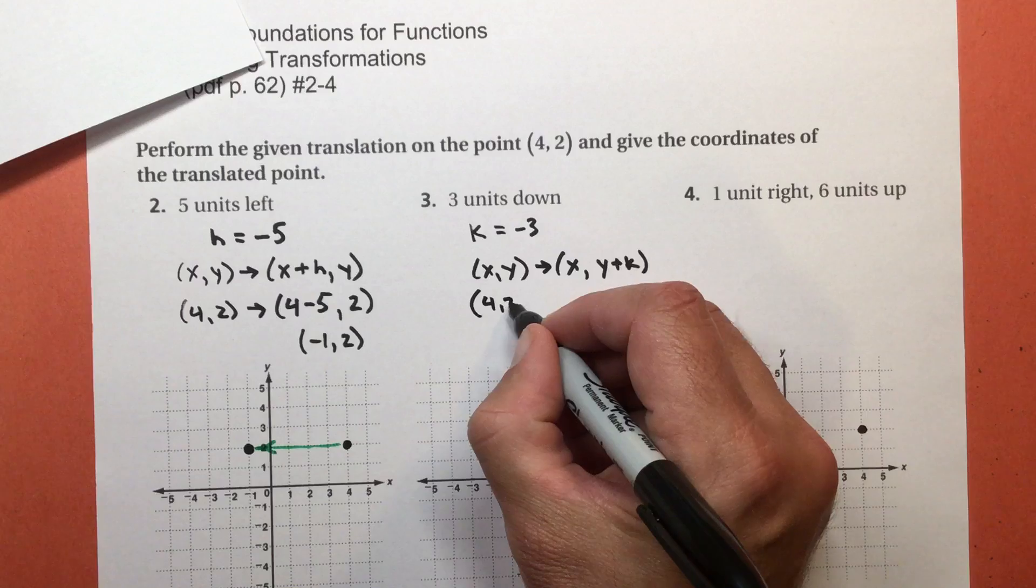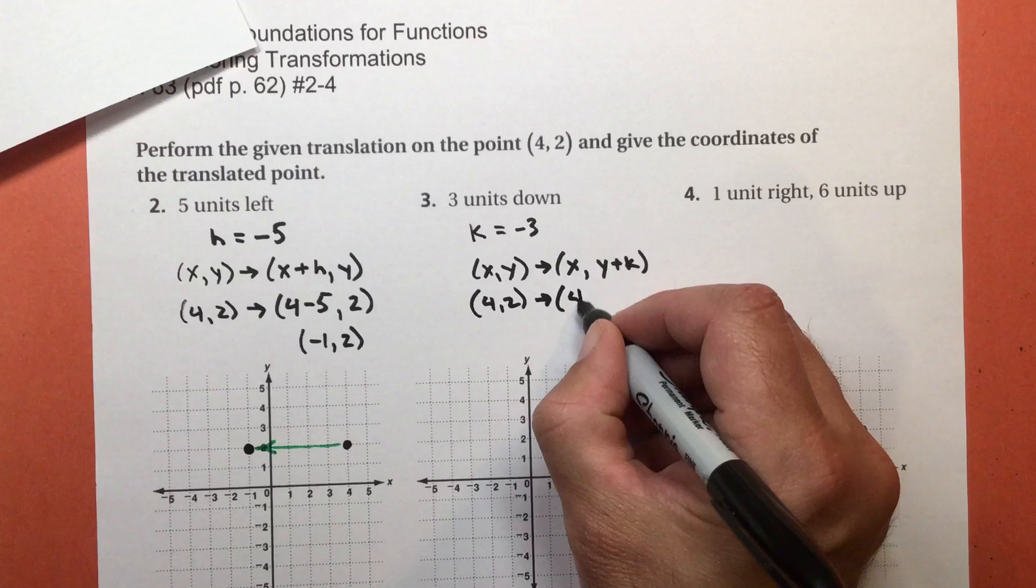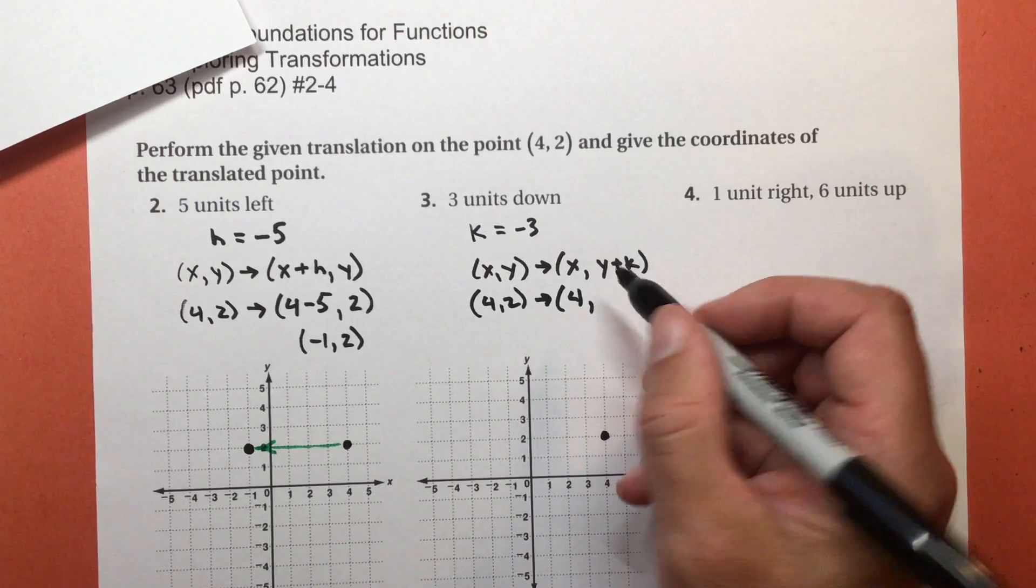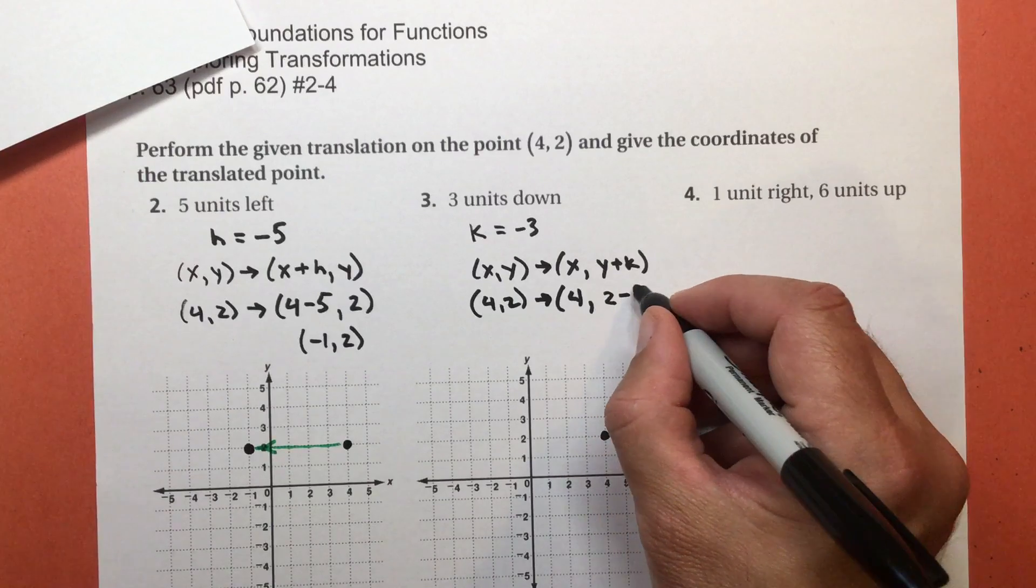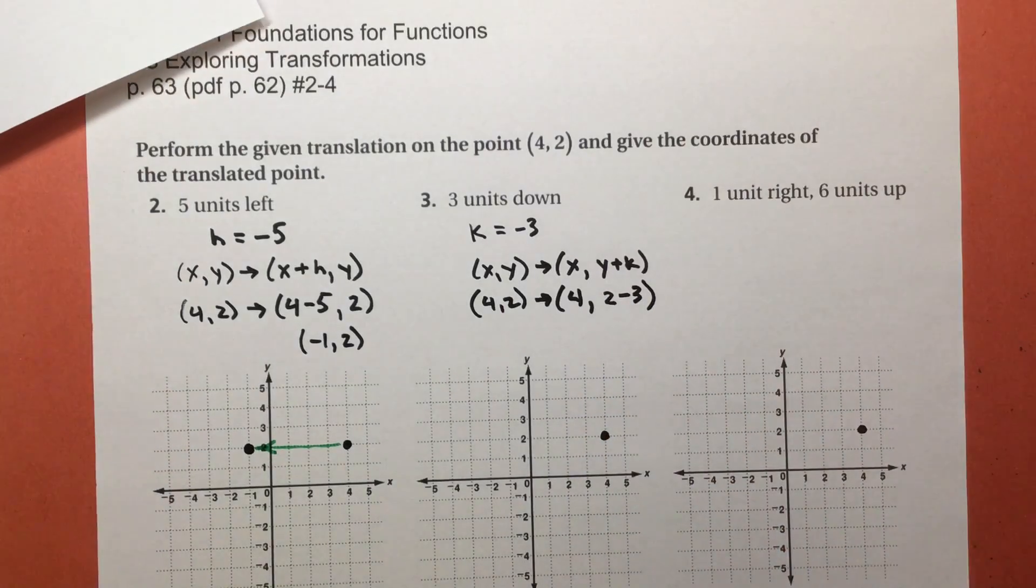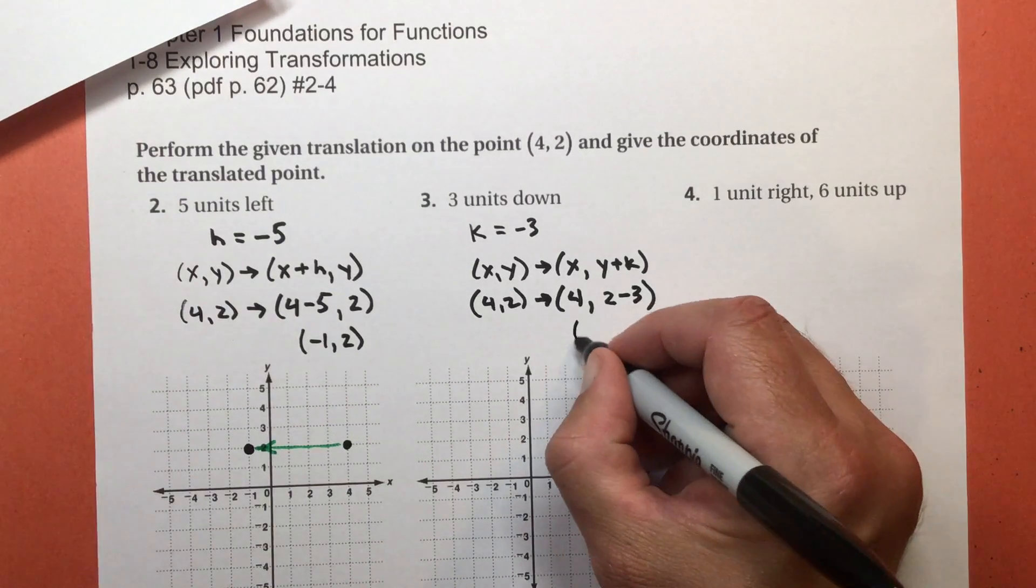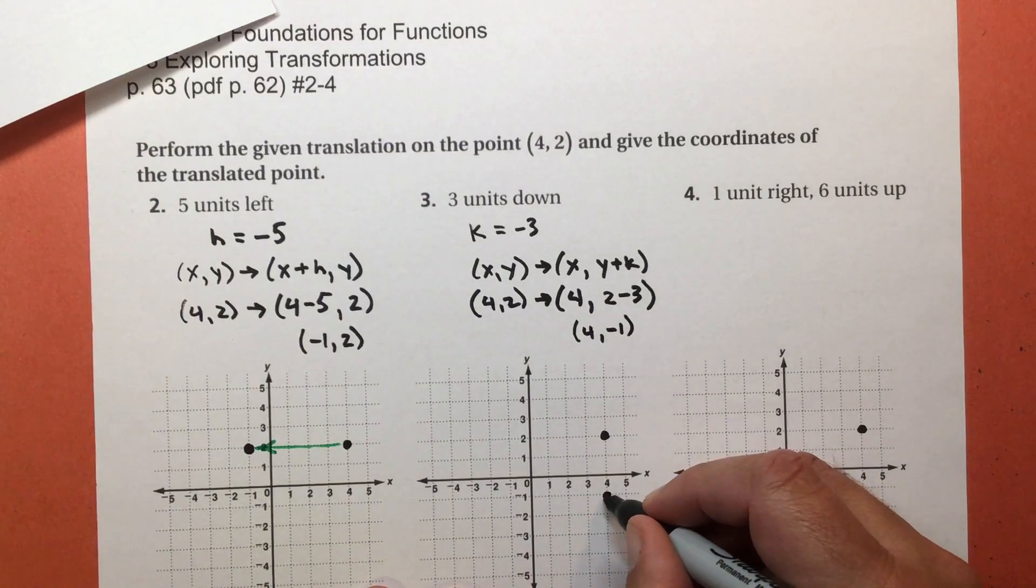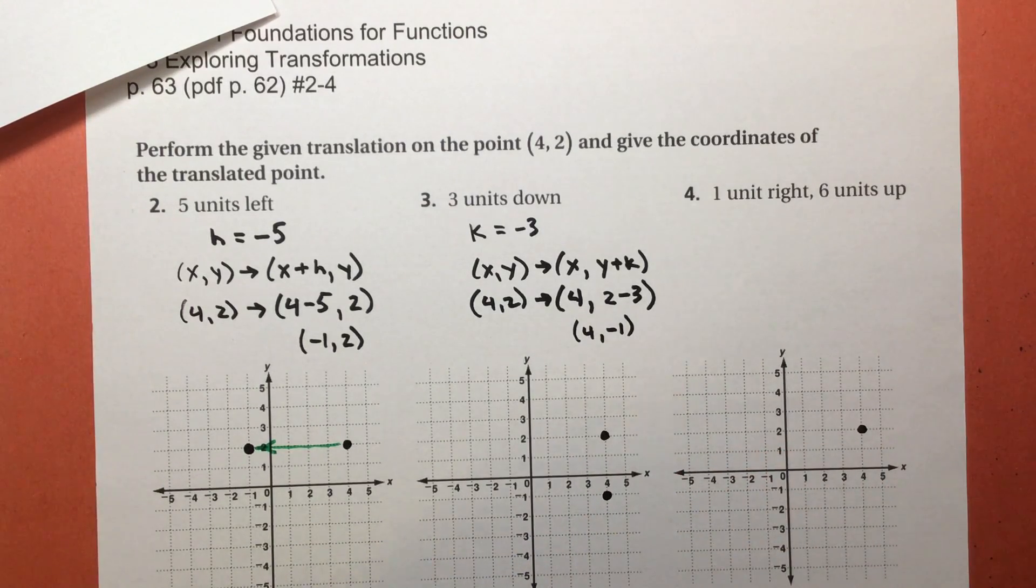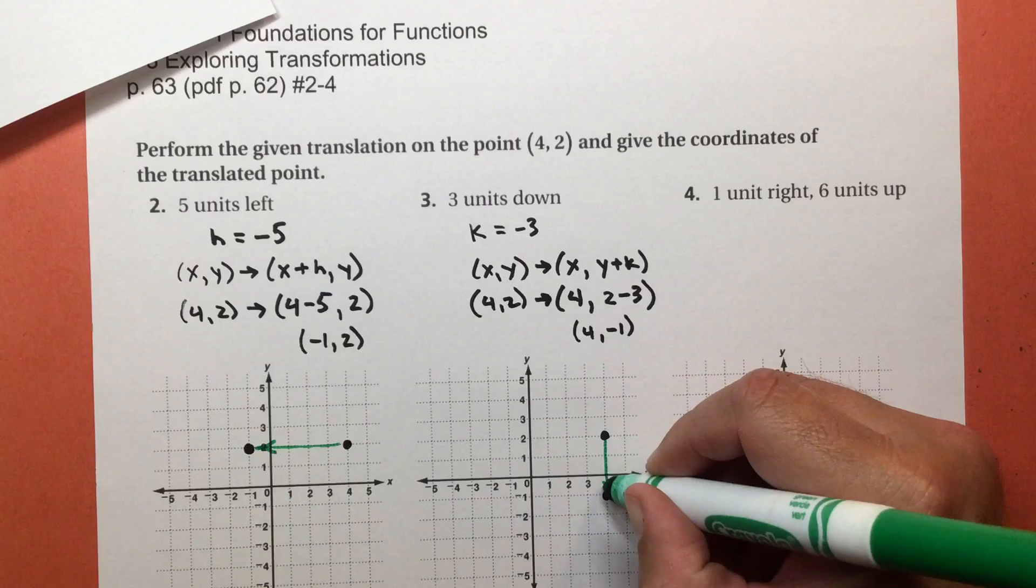So XY changes into X, Y plus k. I start with the point 4,2, like all these problems. And 4 is going to stay the same, the x value. And my Y value, which is 2, I'm going to add k, which is the same as, since k is negative 3, the same as 2 minus 3. And that's going to result in 4, negative 1. So 4, negative 1 ends up here. And just to use the green to show you where it went, it went that way.